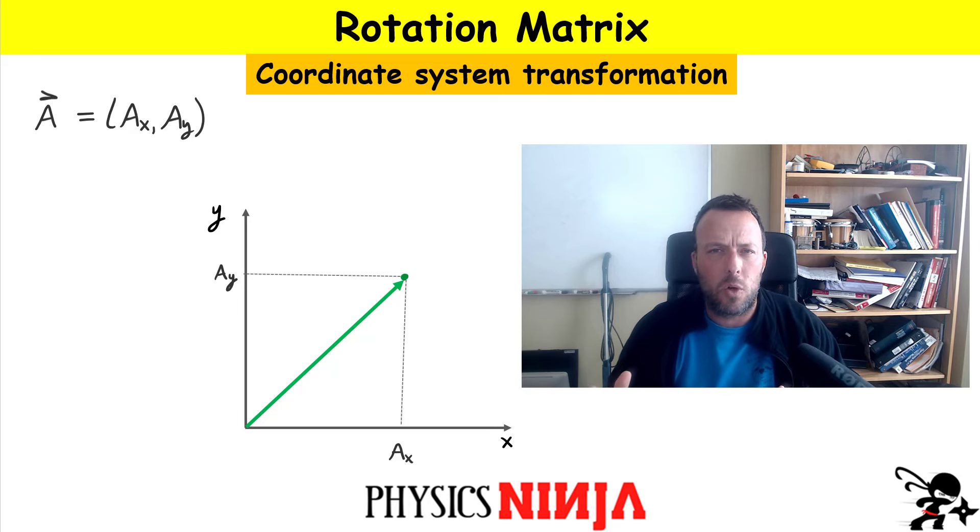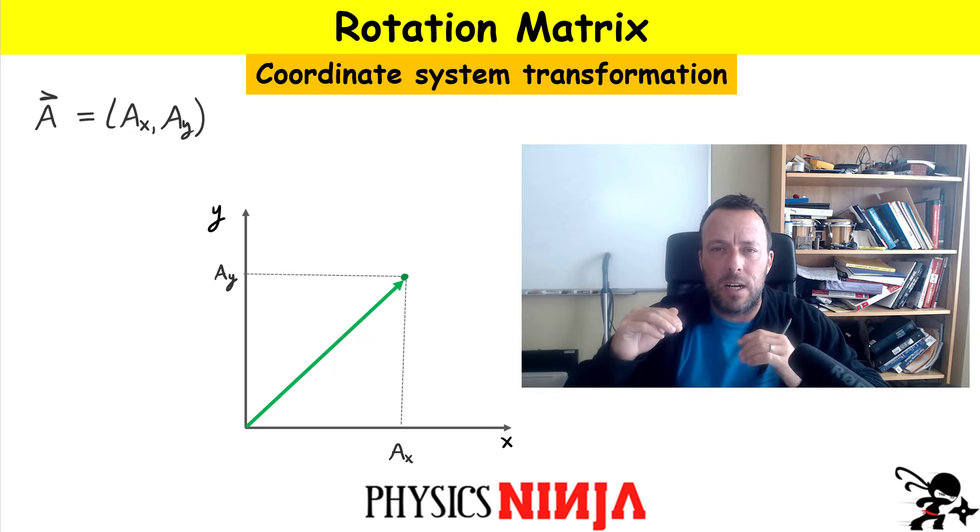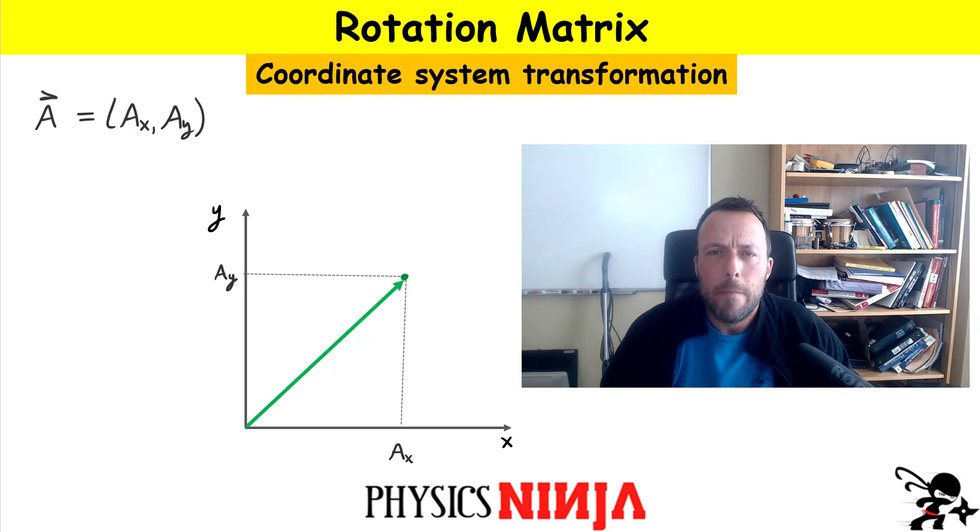This could be a global coordinate system, for example if you're designing a video game where there are multiple coordinate systems, maybe a global one and a lot of local coordinate systems. They might not be parallel to each other. Some may be rotated relative to each other.